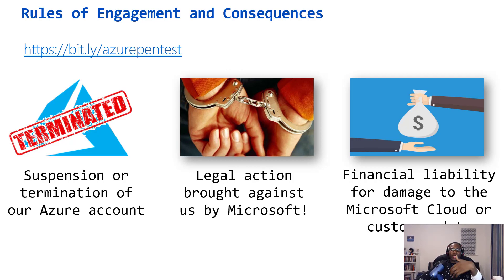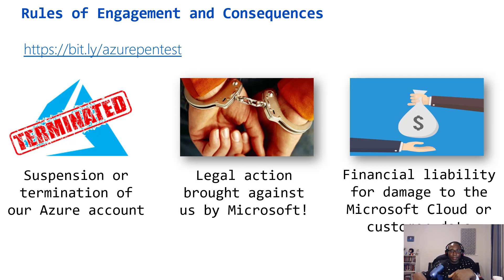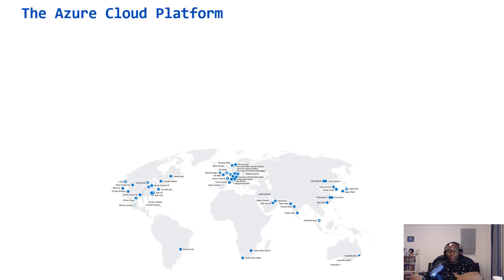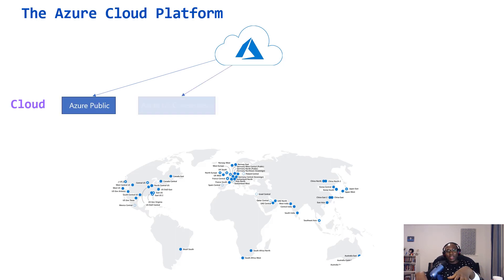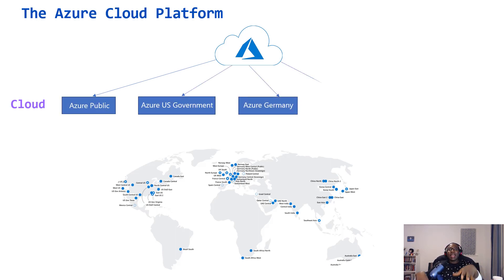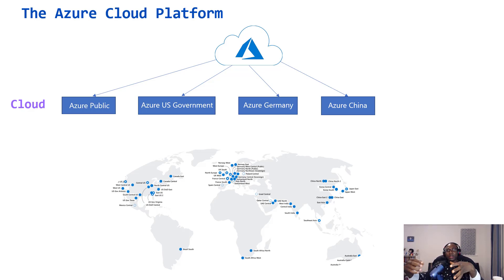Before going further, it's important to have a broad overview of the Azure platform. The Azure platform is actually four different clouds: Azure Public, Azure US Government, Azure Germany, and Azure China. These platforms are separated not only physically but also logically, meaning they have different management endpoints. Azure Public has about 42 regions, US Government has 7, Germany has 2, and China has 4. Microsoft has also announced 11 new regions currently being built.